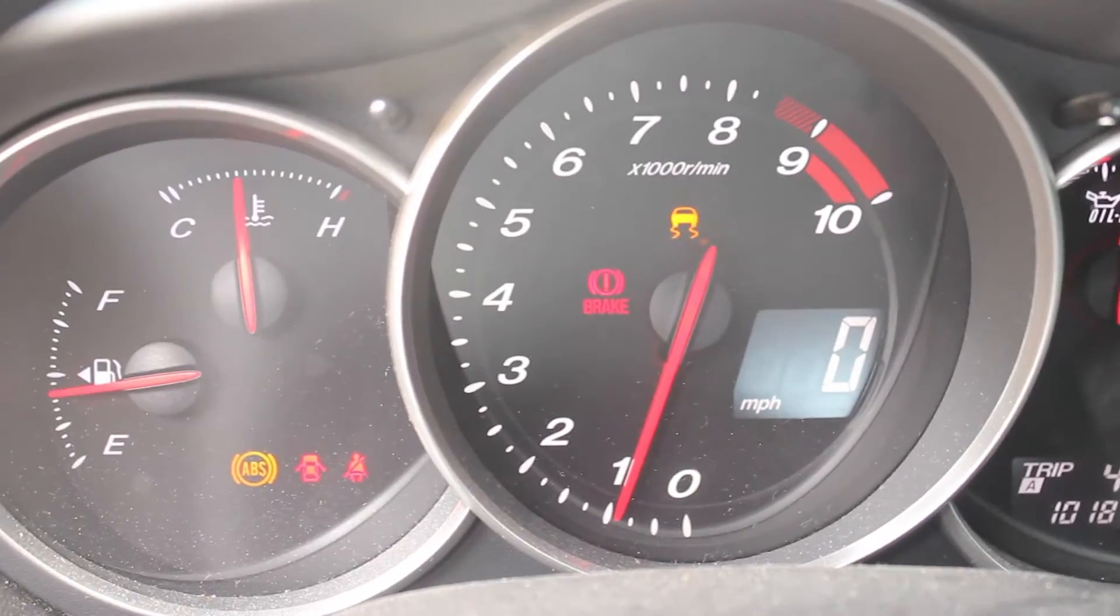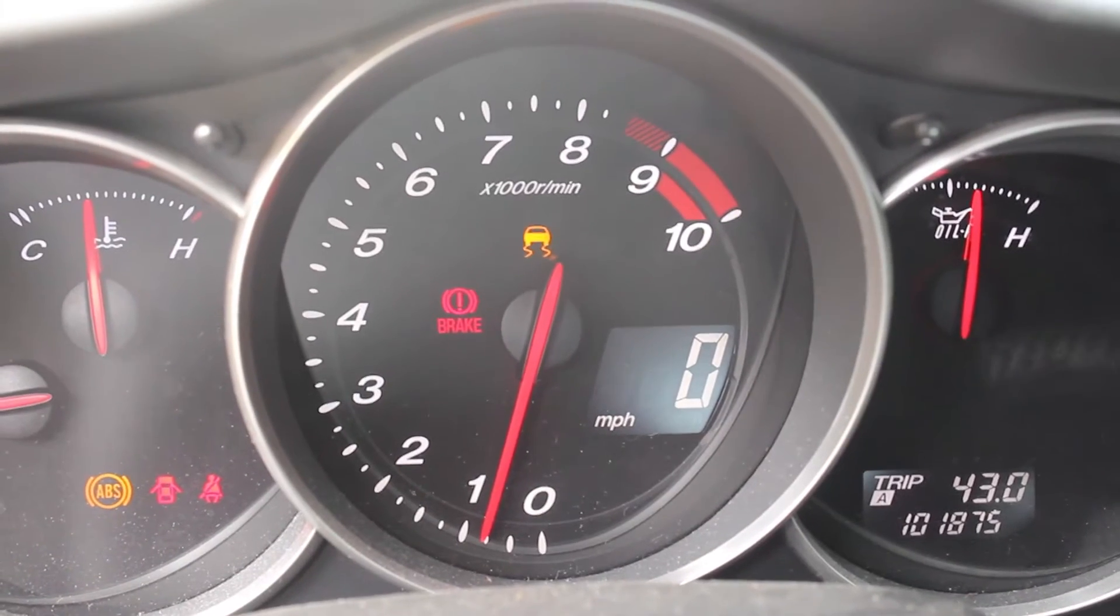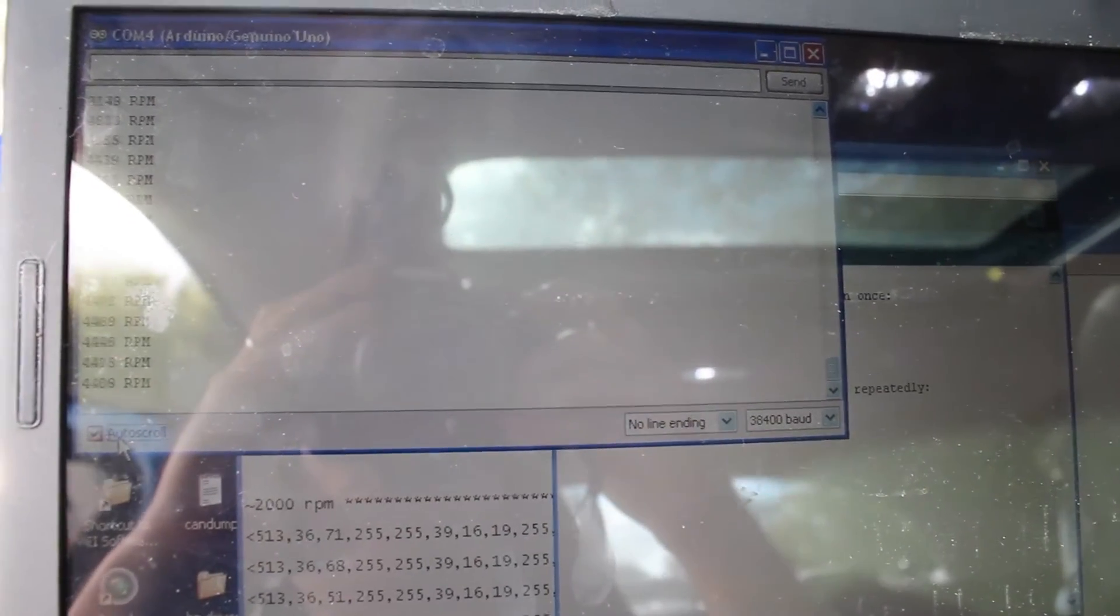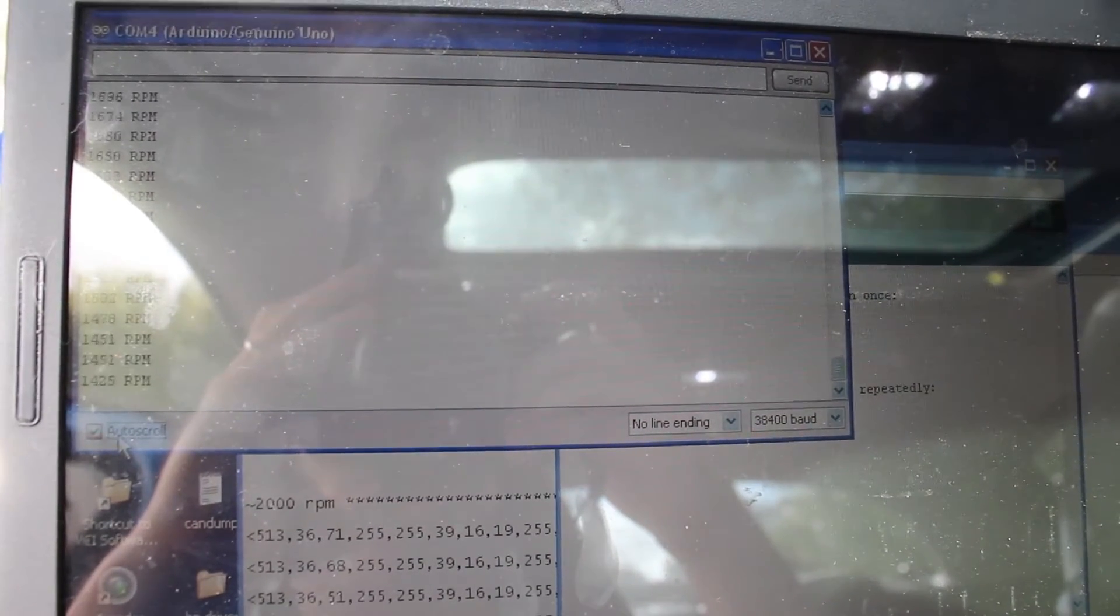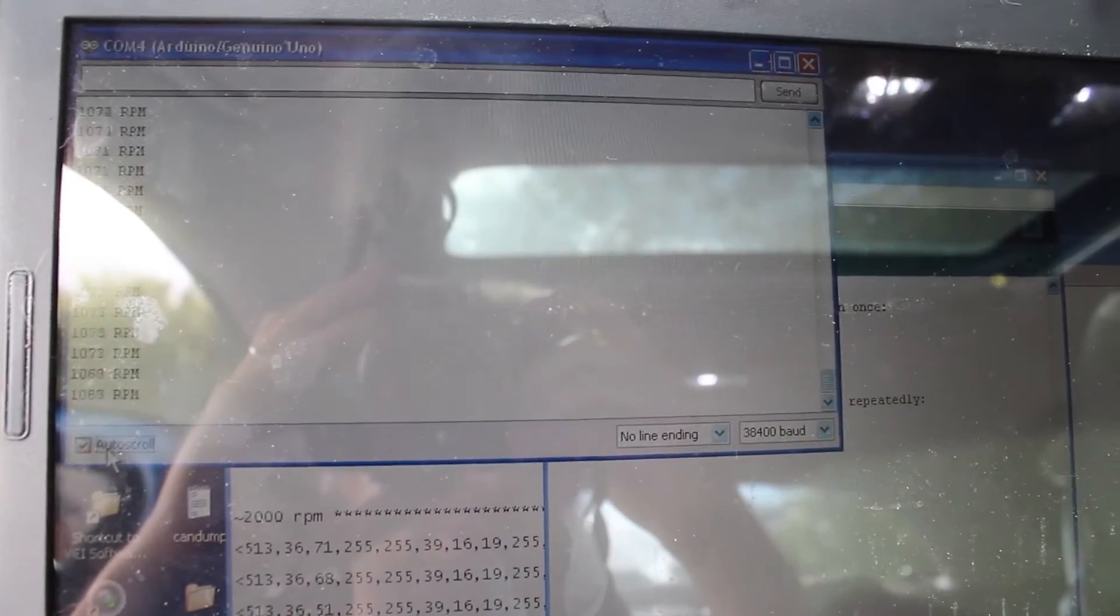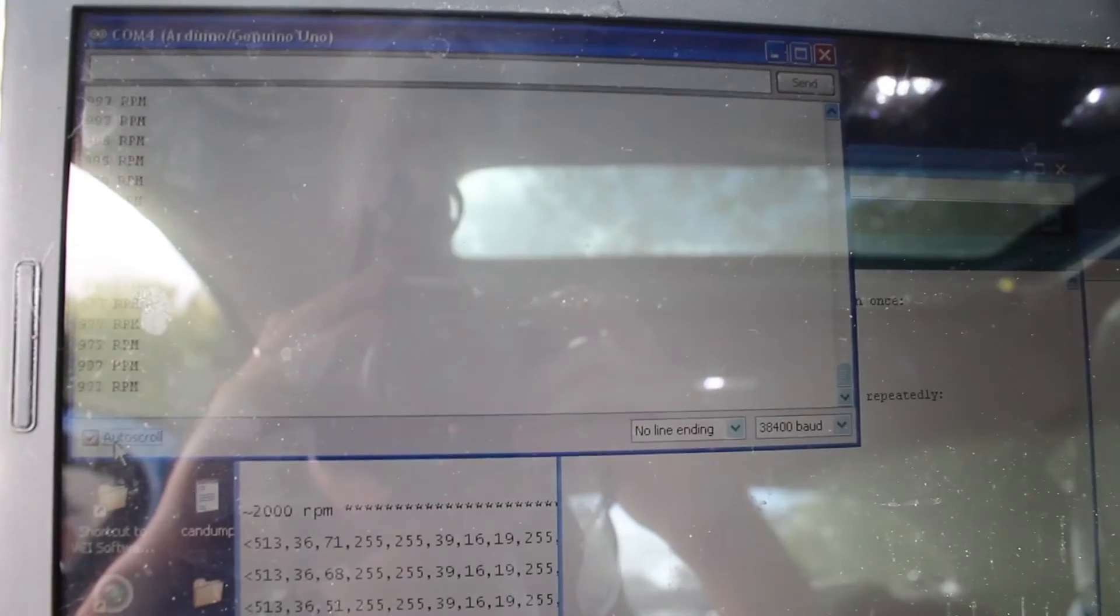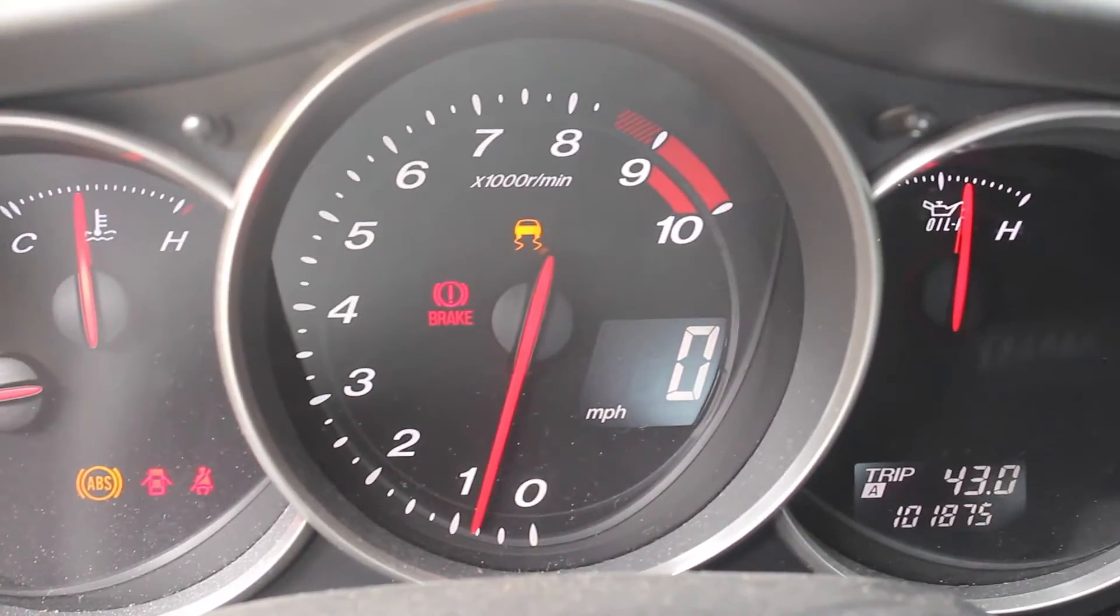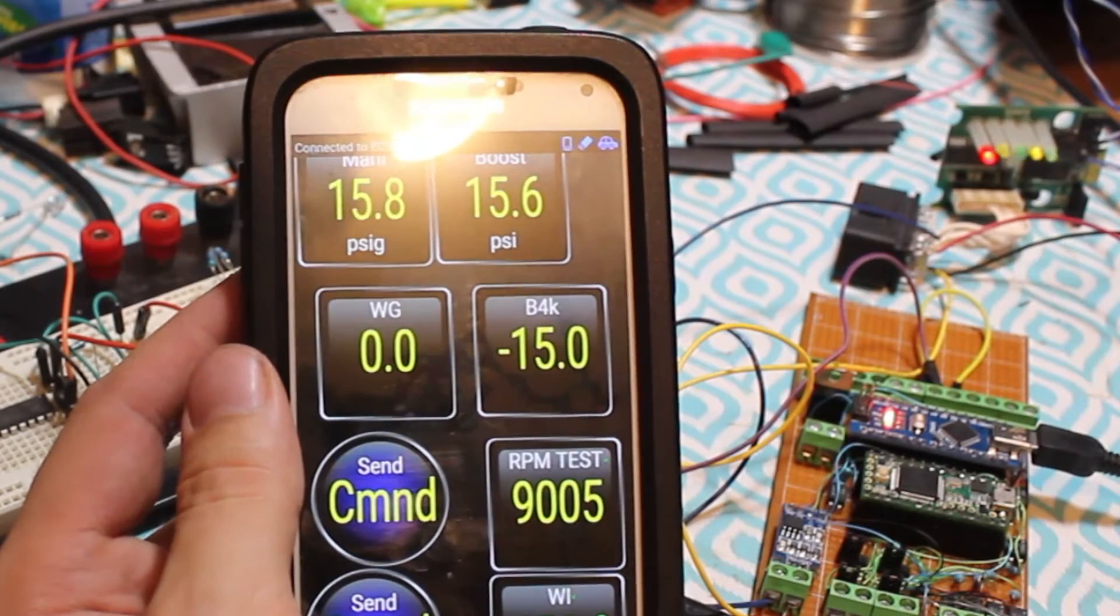Earlier, I read the RPM signal to my dash from the CAN bus. This gives me a precise RPM to use in calculations. Now I've added that signal to my ECU simulator. This could easily be used to drive an RX-8 dash without the stock ECU, but instead I'm using it to feed my Teensy an RPM signal just for testing.